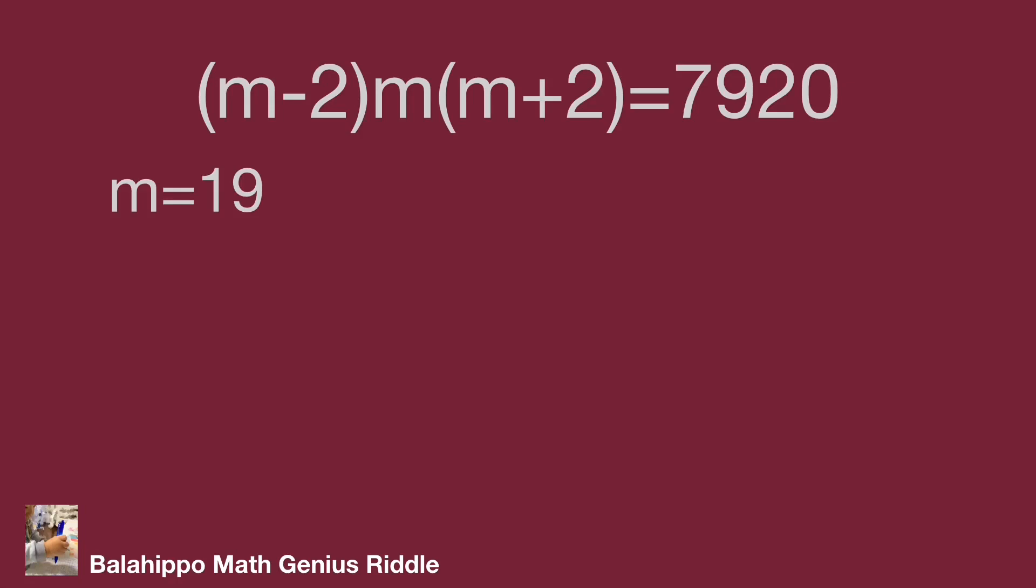The equation becomes 17 times 19 times 21 equal to 6783. The number is smaller and not equal to the value 7920.